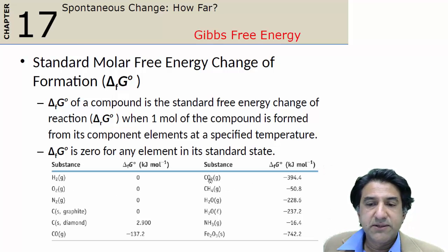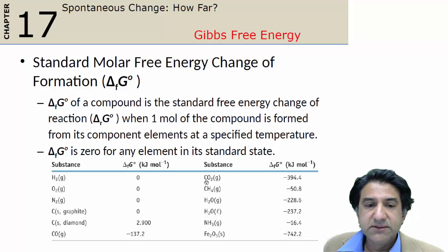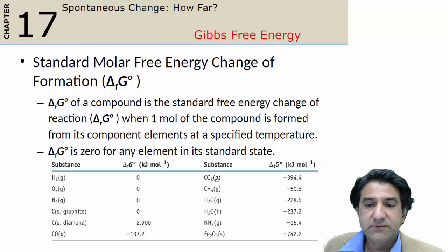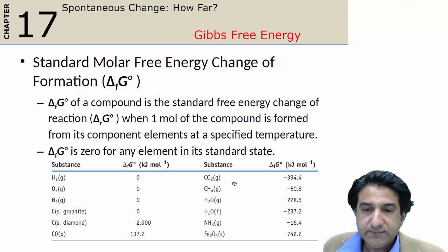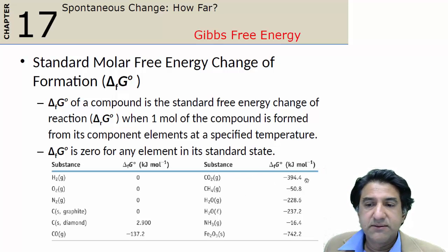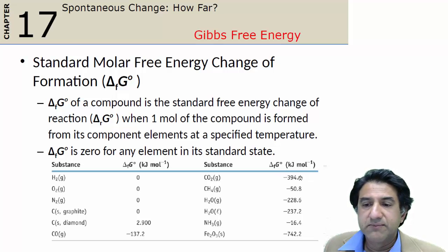Here's the free energy of formation of carbon dioxide. Formation of carbon dioxide from what, you say? Well, from carbon in its standard state, which is graphite, and from oxygen in its standard state, which is O₂. We probably should say in its reference state. So in this case, we have carbon dioxide, and that is its free energy of formation per mole.